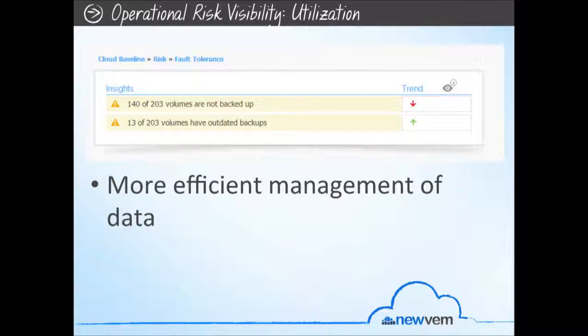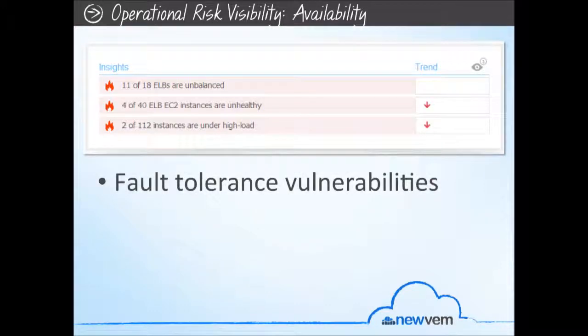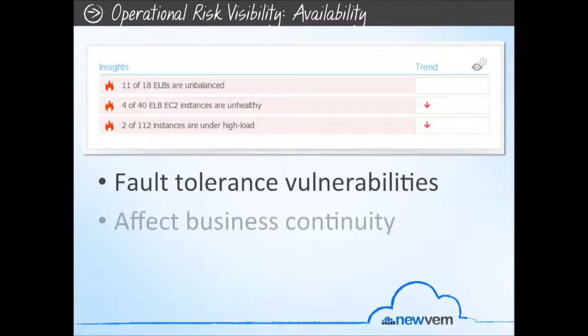With its comprehensive coverage of your cloud resources, NewVim provides visibility into potential operational risks stemming from fault tolerance vulnerabilities. Overloaded resources and maintenance work may directly affect the continuity of your business services. System failures and outages may have a similar effect on your business. NewVim helps you identify fault tolerance risks derived from resource unavailability, such as overloaded compute instances and maintenance windows, single points of failure such as ill-configured load balancers or unhealthy instances, or reduced recoverability like stale volume snapshots or missing snapshots.